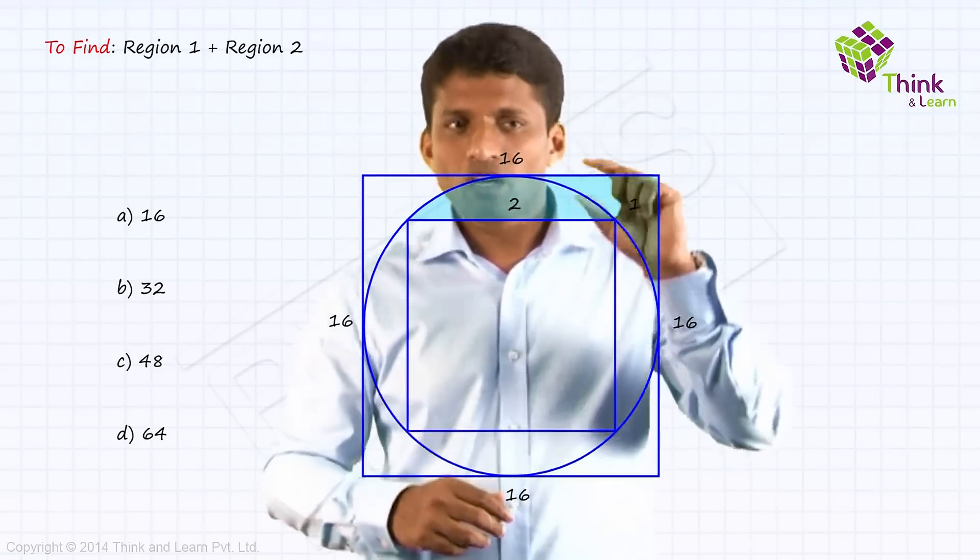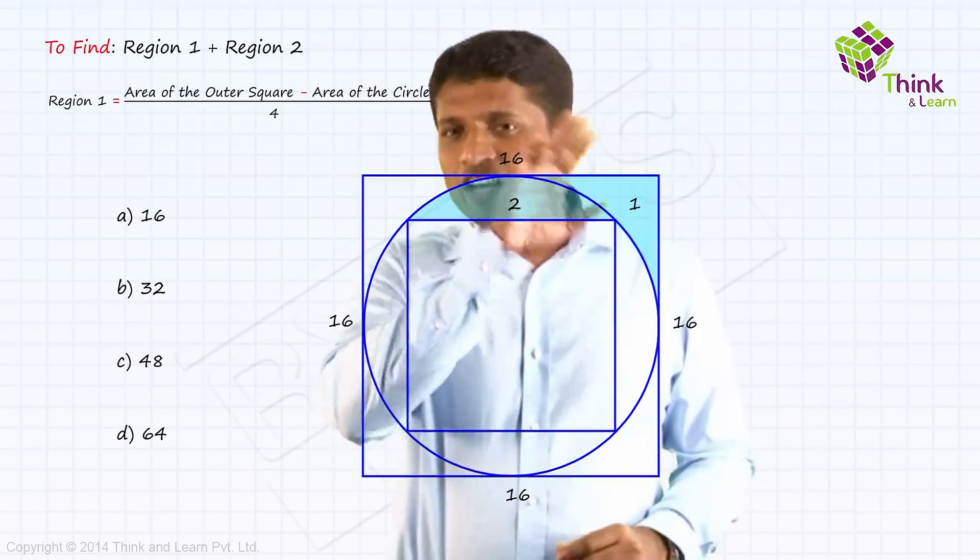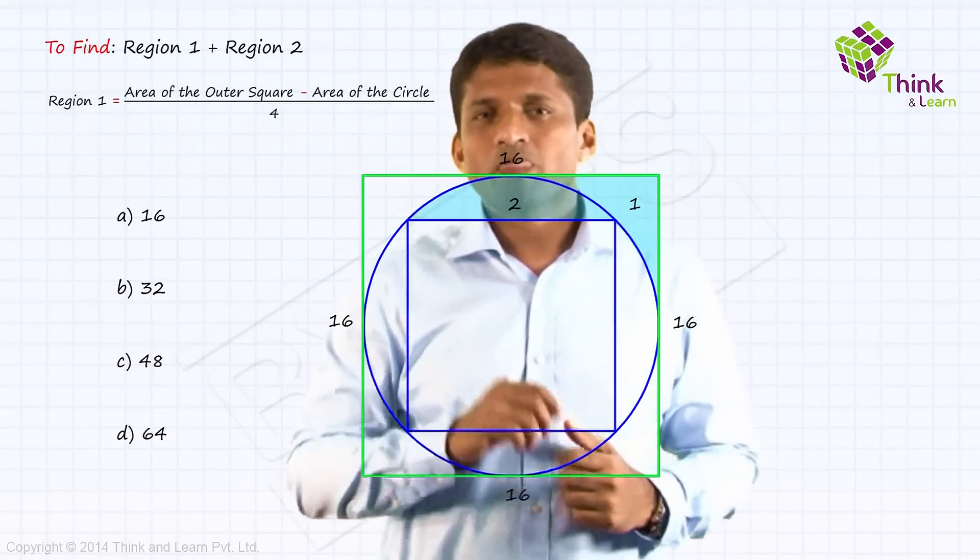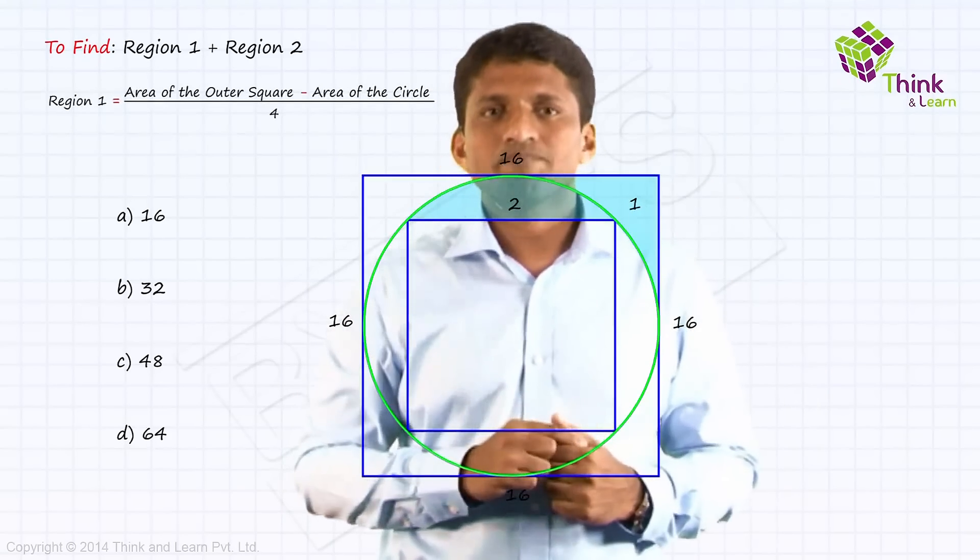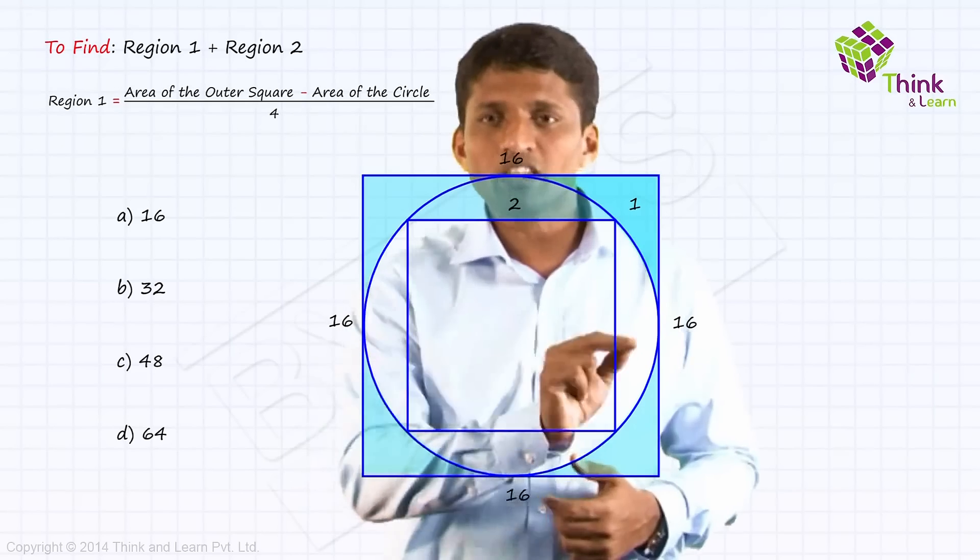And how will you solve? Region 1. How will you find region 1? Region 1 is area of the square minus area of the circle, and you will divide it by 4. Now why you are dividing by 4? As you can see, there are 4 equal regions.